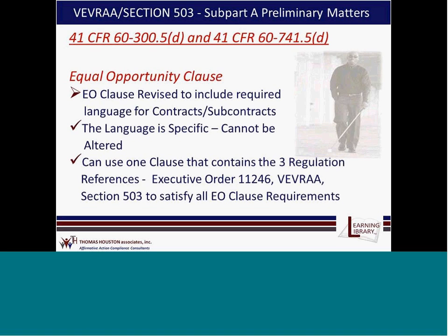In Section 503, the Equal Opportunity Clause was revised to include required language for contracts, subcontracts, and purchase orders. The language is specific, cannot be altered, and must be in bold font — that is now mandatory. However, contractors and subcontractors can use one EEO clause containing the three regulatory references: Executive Order 11246 covering minorities and females, VEVRA for protected veterans, and Section 503 for individuals with disabilities. One clause with references to those three regulations will satisfy all EEO clause requirements.